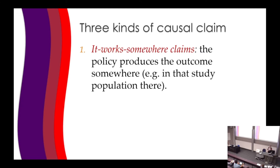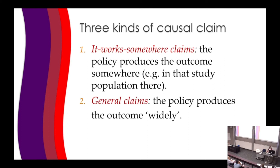First, there are 'it works somewhere' claims — claims that a particular policy, described in some detail, produced the outcome somewhere, for example in a particular study population. That's what post hoc evaluations establish, and that's what an RCT establishes. Second, there are general claims: the policy produces the outcome widely. When we say 'it works,' it suggests it works widely, perhaps with an implied scope — though without an implied scope, it's not a well-formulated claim.